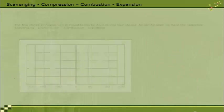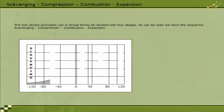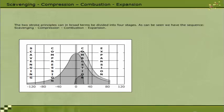The two-stroke principles can in broad terms be divided into four stages. As can be seen, we have the sequence scavenging, compression, combustion, and expansion.